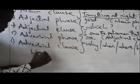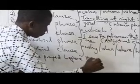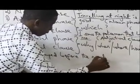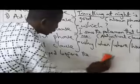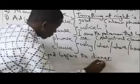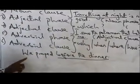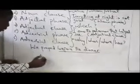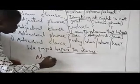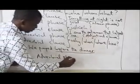And finally, we have adverbial. For example: 'We pray before the dinner' — with 'before the dinner' underlined. You can tell me the answer to the question 'when.' When did we pray? We say 'before the dinner.' So that's adverbial. Now, can we say this is a phrase or a clause? It has no finite verb, so it becomes a phrase — an adverbial phrase.